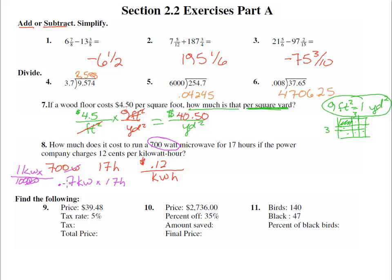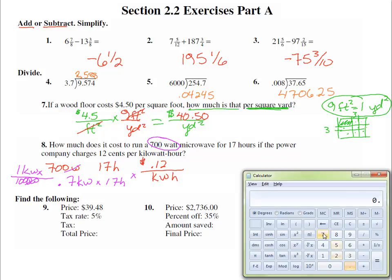When we times these together, 17 hours—if we times these, we get kilowatt hours. Then when we times this one, the kilowatt hours will cancel. So let's get our calculator out. 0.7 times 17, and that equals 11.9. So we really have 11.9 kilowatt hours.